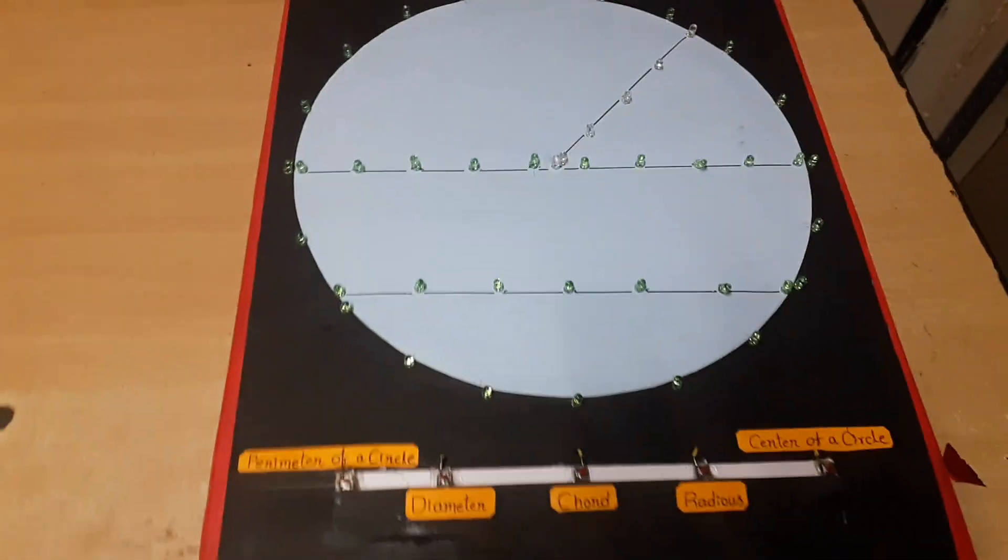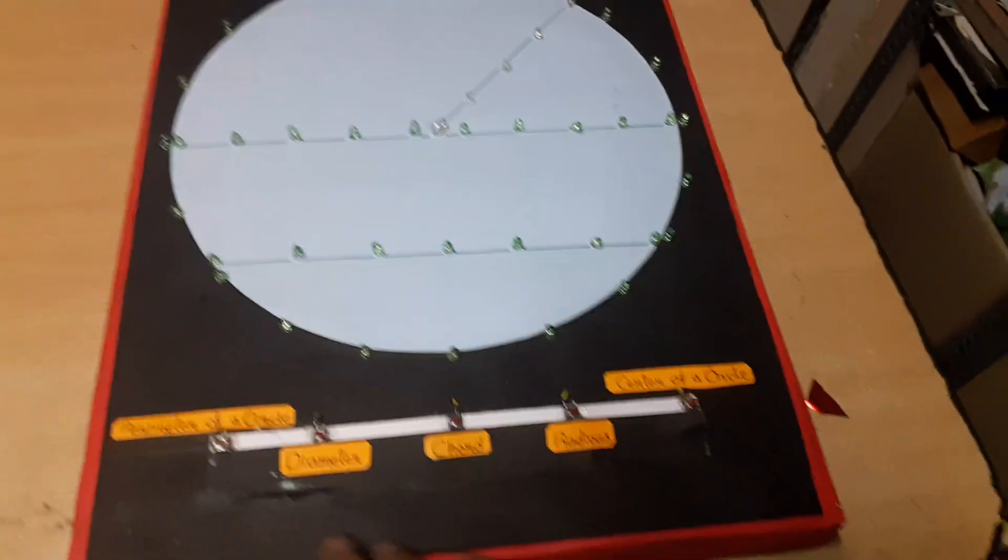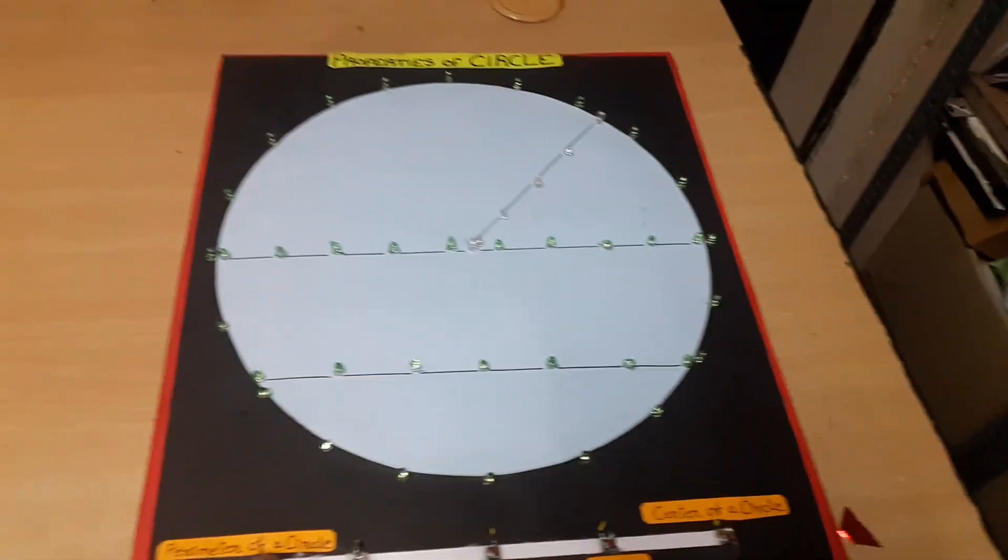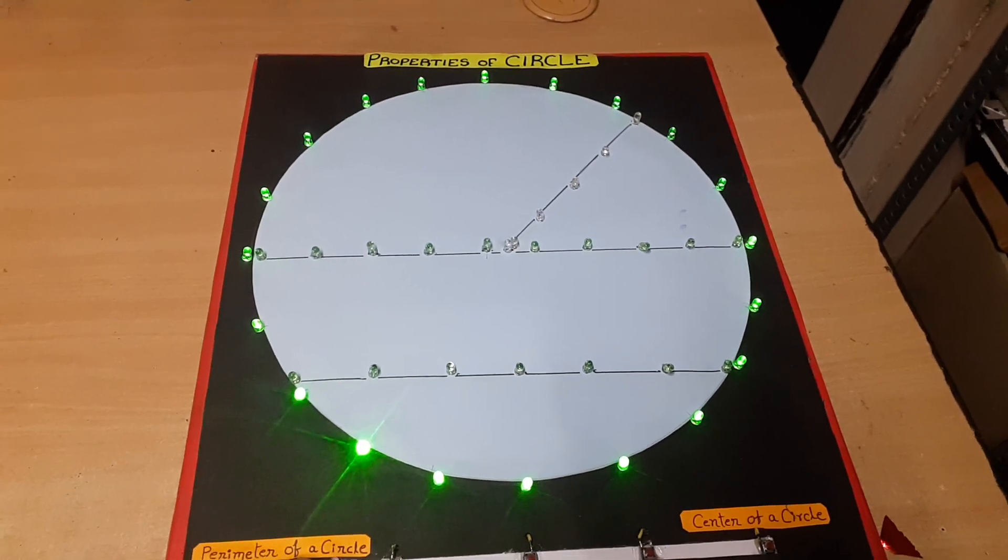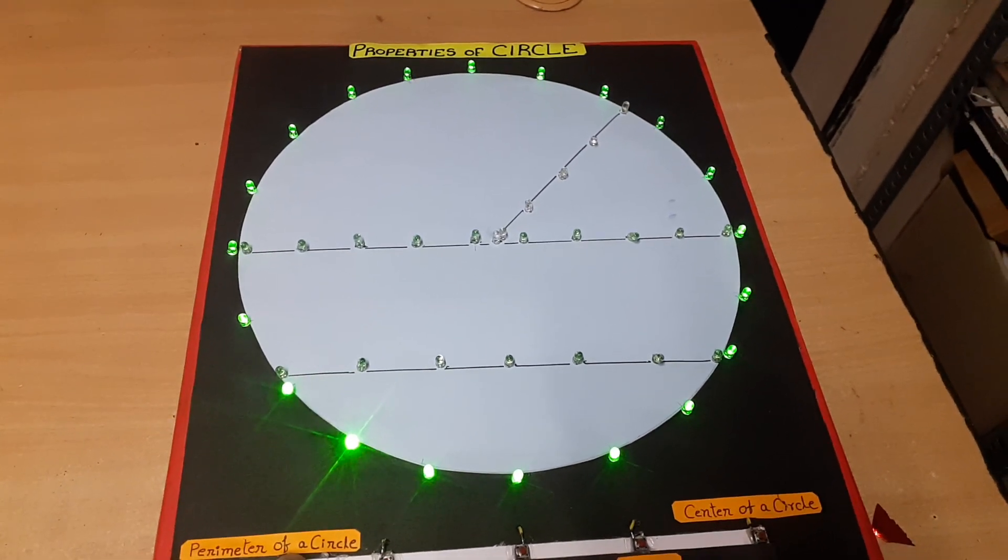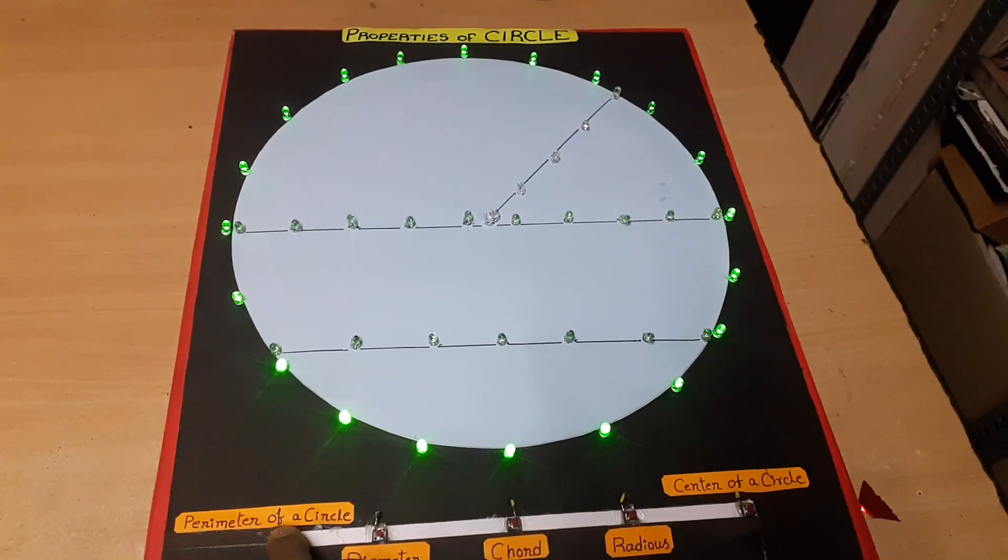The first switch shows the perimeter of the circle. All the lights along the perimeter glow when you press this button.